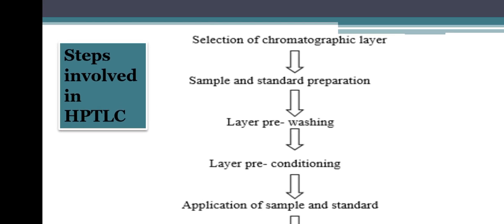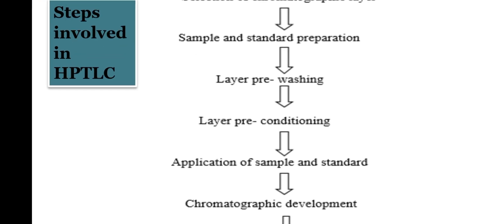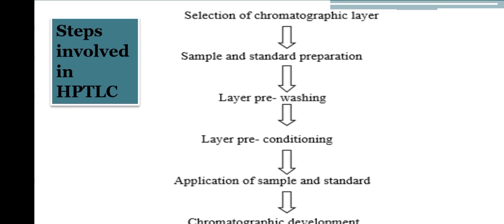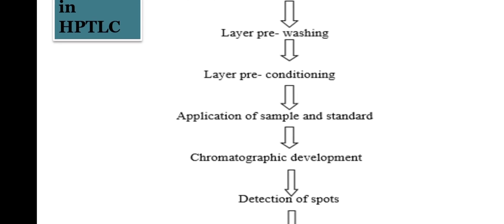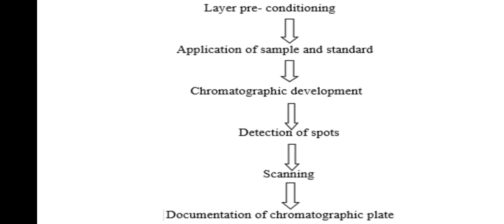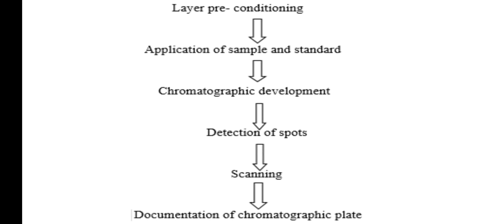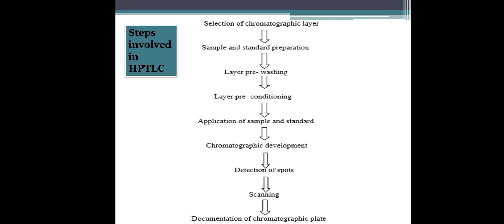The basic steps involved in HPTLC are: (1) selection of the chromatographic plate, (2) sample and standard preparation, (3) layer pre-washing, (4) layer pre-conditioning, (5) application of sample and standard, (6) chromatographic development, (7) detection of spots, (8) scanning, and (9) documentation of the chromatographic plate.